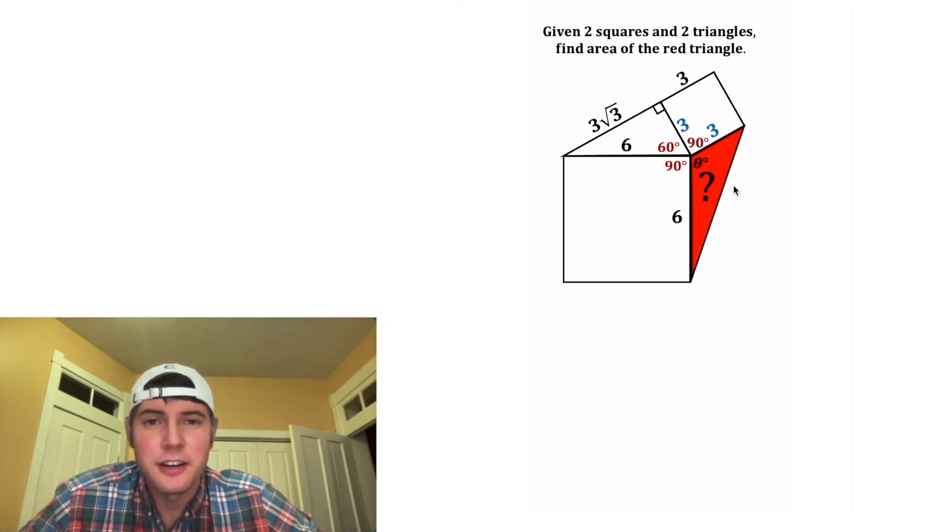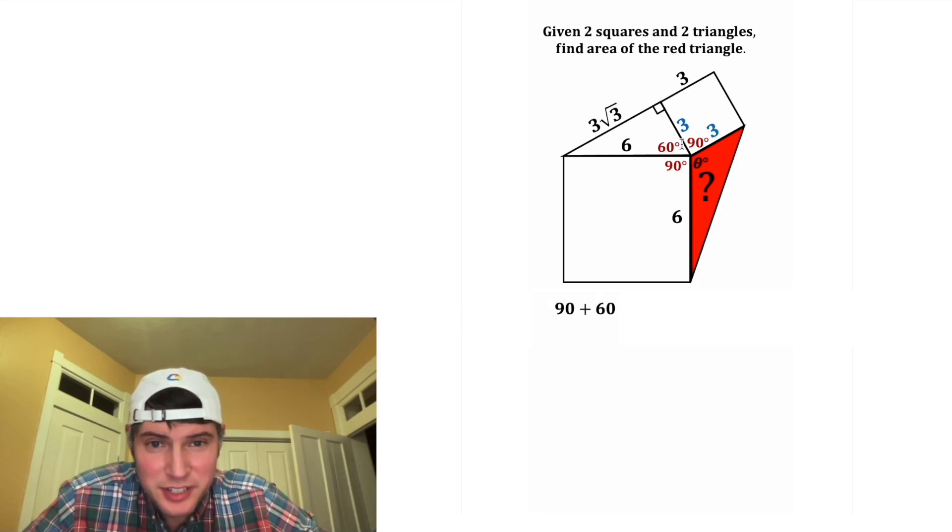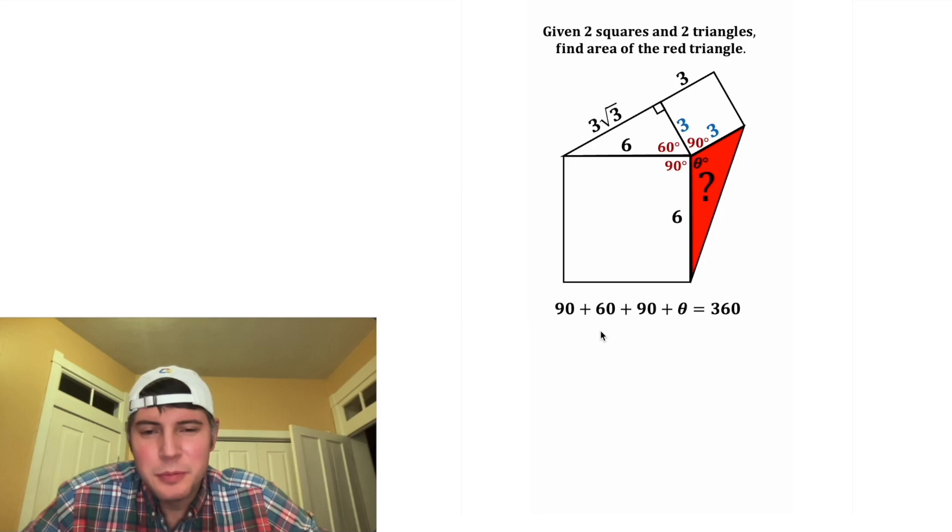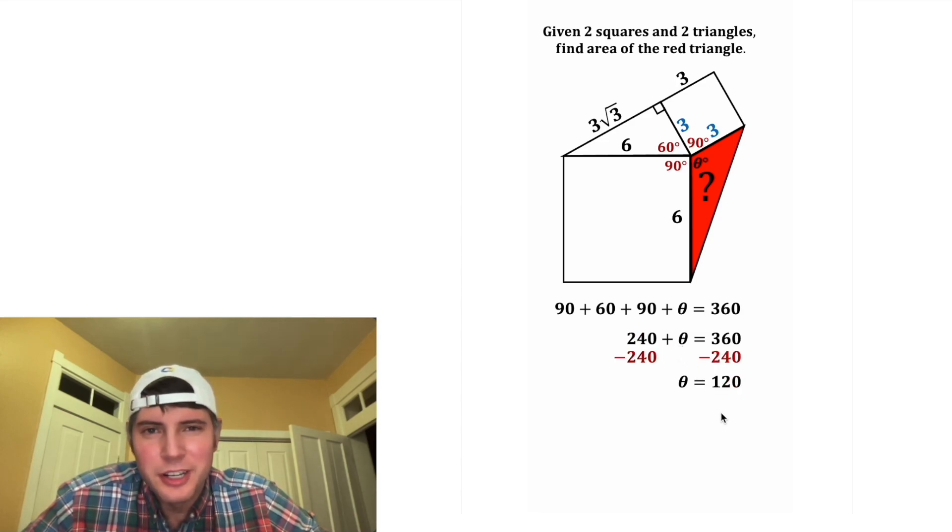And let's call this missing angle theta. Now if we look here, 90 plus 60 plus 90 plus theta must equal 360 degrees. 90 plus 60 plus 90 is equal to 240, so 240 plus theta equals 360. After we subtract 240 from both sides, we get theta equal to 120. So we can update this up here to 120 degrees.